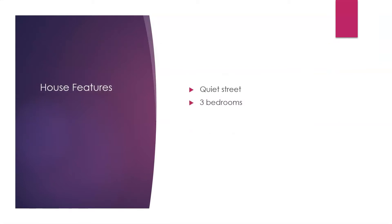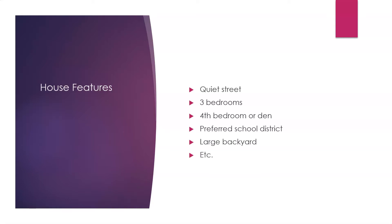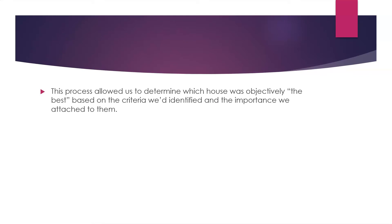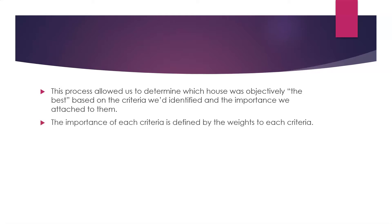In our example, the house features we were looking at were quiet street, three bedrooms, a fourth bedroom or a den, preferred school district, and a large backyard — and it was actually quite an extensive list with a lot more features than that. This process allowed us to determine which house was objectively the best based on the criteria we'd identified and the importance we'd attached to each of them. The importance of each criterion is defined by the weights we attach to it.